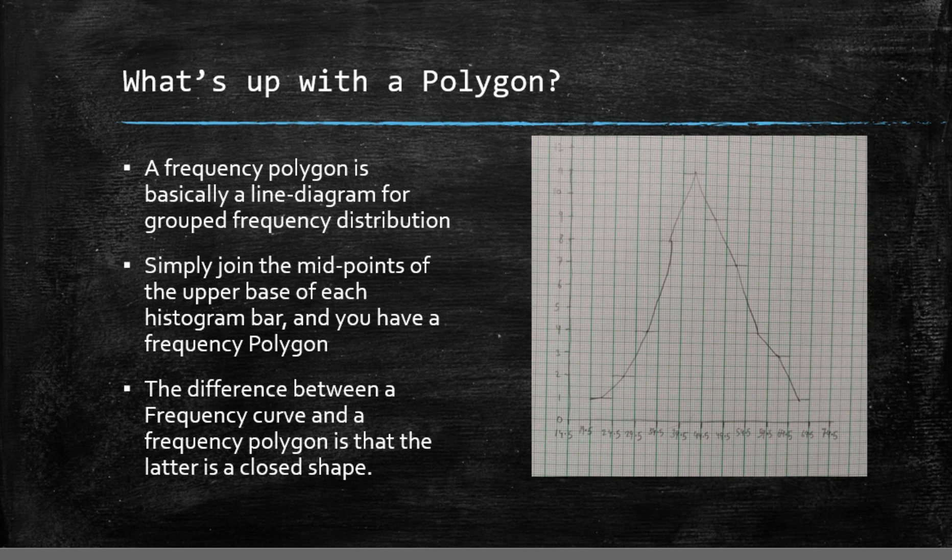The difference between a frequency curve and a frequency polygon is that the latter is a closed shape. That means that the practice of taking two extra classes is not needed while making a frequency curve. Those two extra classes make sure that our polygon remains a closed figure.